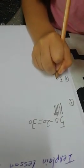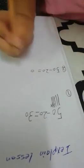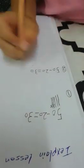Another way. 50 minus 20 equals. 0 minus 0 equals 0. 5 minus 2 equals 3. The answer is 30.